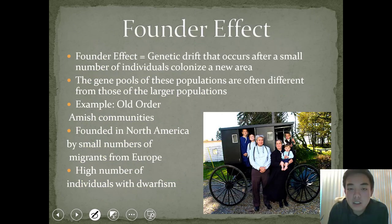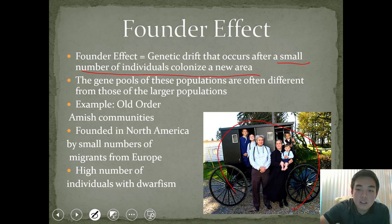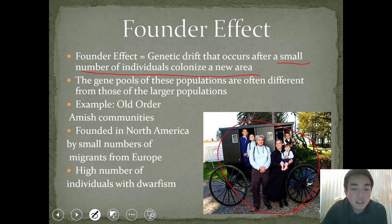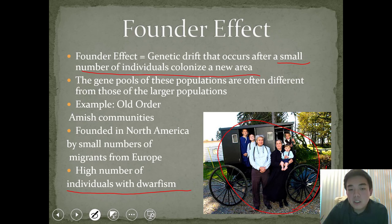The founder effect is a type of genetic drift that occurs when a small number of individuals colonize a new area. These founders do not represent the original population and are often genetically very different. One example is the Old Order Amish community, who came from Europe and settled in Pennsylvania. Because the founding group was a non-random selection of individuals, there is a high number of individuals with dwarfism in that community — which may not have been representative of the broader European population they came from.